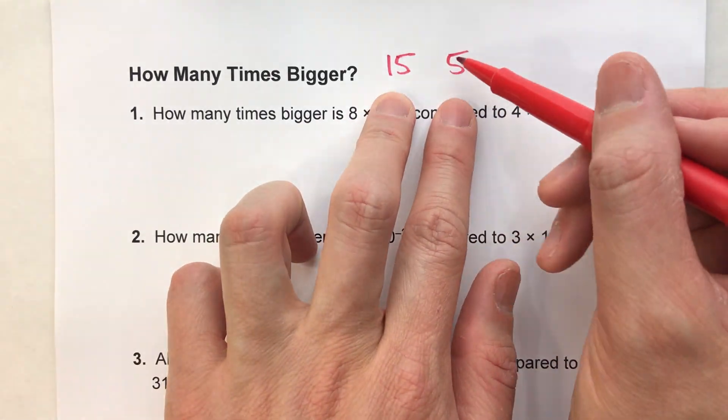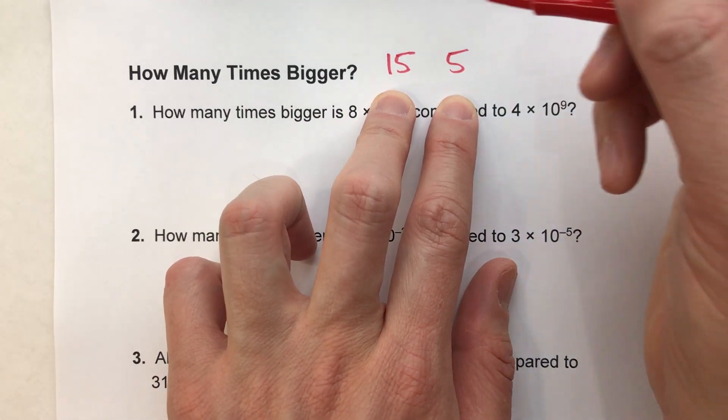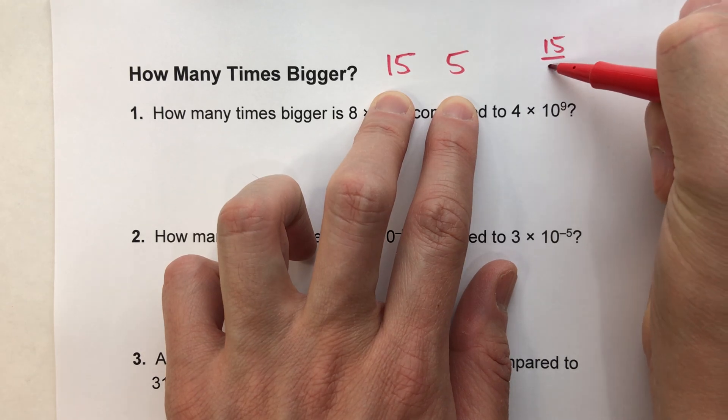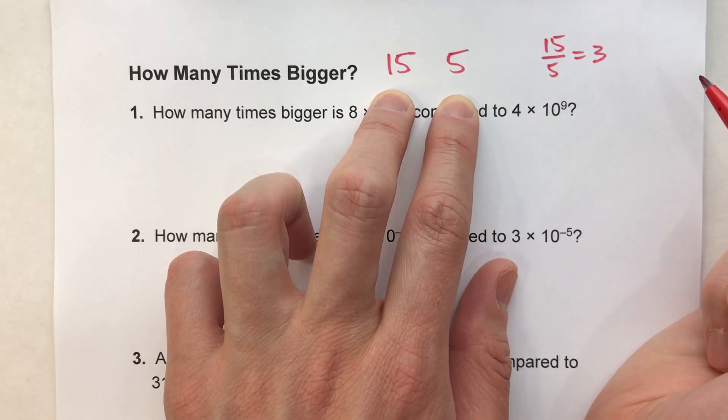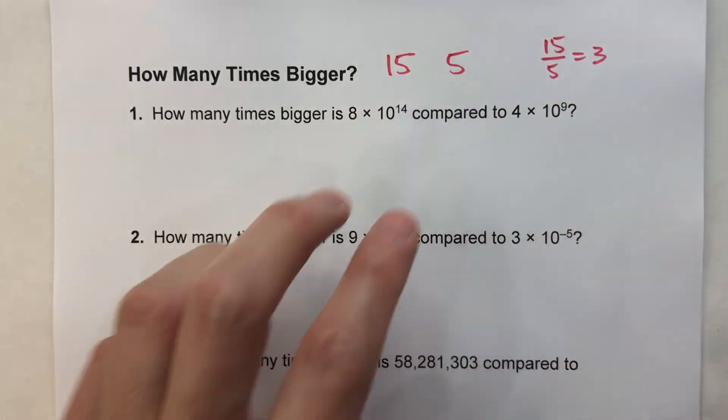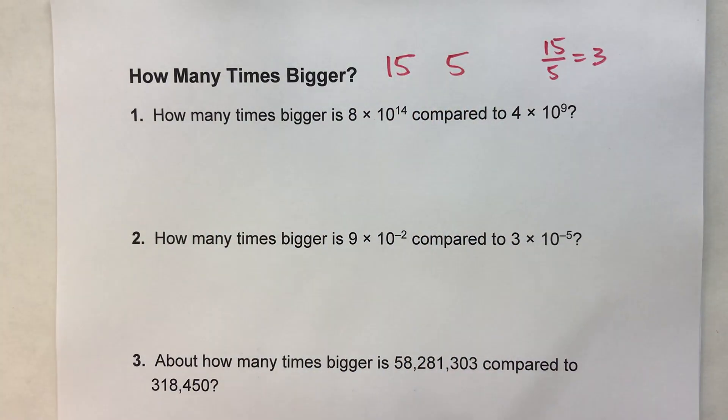But think to yourself, what would you actually do with these numbers to get that 3? Well, 15 divided by 5 gets me my 3, and that's how we know how many times bigger it is. So we simply divide these numbers, and that's what we're going to do with these problems.